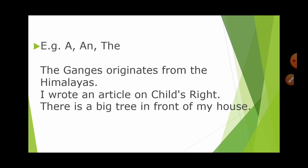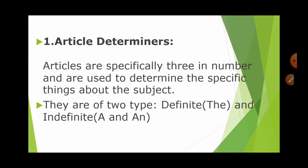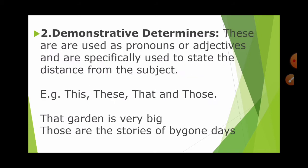Next are demonstrative determiners. These are used as pronouns and adjectives and are specifically used to state the distance from the subject. Examples are: this, that, these, those. For example, 'That garden is very big' — the garden is far, so we use 'that'. 'Those are the stories of bygone days.'